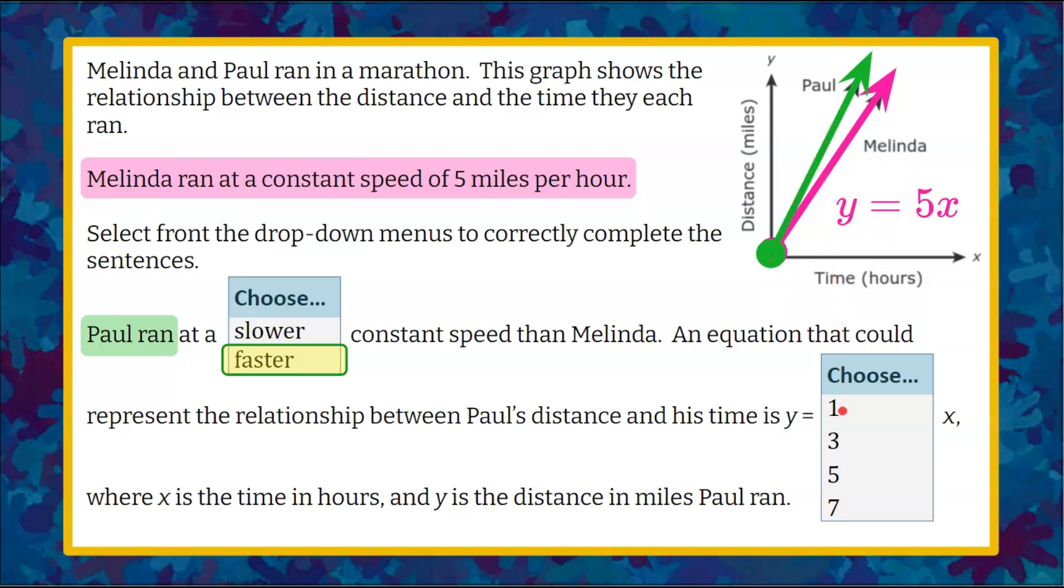So therefore, we know it can't be 1, 3, or 5, and the only option here is going to be that Paul, from his line, is so steep that it has to be greater than 5, making it the only choice of 7.